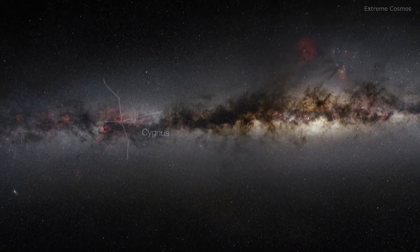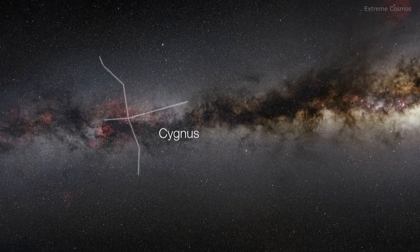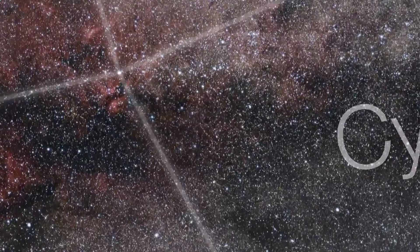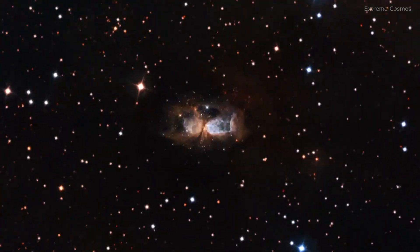A few thousand light-years away, in the constellation of Cygnus, lies the compact star-forming region SH2-106, or just S106 for short.